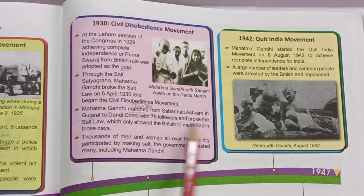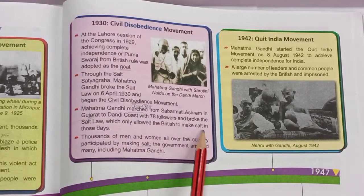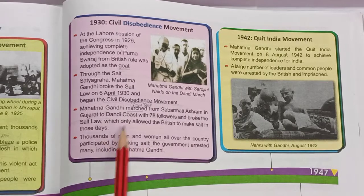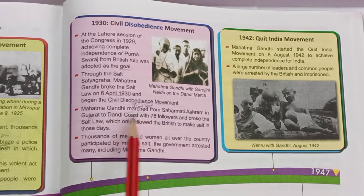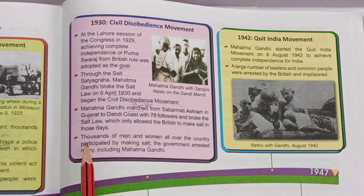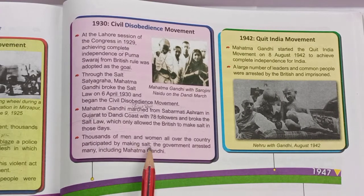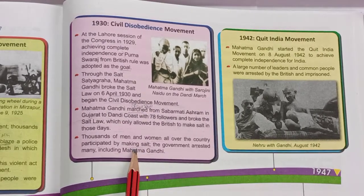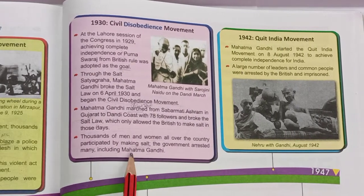Mahatma Gandhi marched with 78 followers from Sabarmati Ashram in Gujarat to the Dandi coast, breaking the British salt law which only allowed the British to make salt. Thousands of men and women all over the country participated by making salt themselves. The government arrested many people, including Mahatma Gandhi.